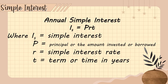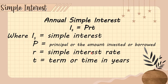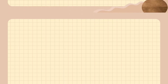Now let's define simple interest. Here is the formula for annual simple interest: I_s = P × r × t, where I_s is the simple interest, P is the principal or the amount invested or borrowed, r is the simple interest rate, and t is the term or time in years.